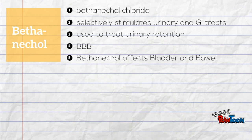Lastly, bethanechol selectively stimulates the urinary and gastrointestinal tract. It is used to treat urinary retention. An easier method to remember is BBB: bethanechol affects the bladder and bowel.